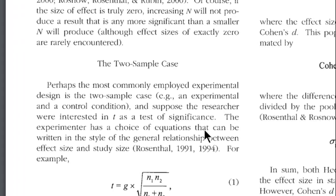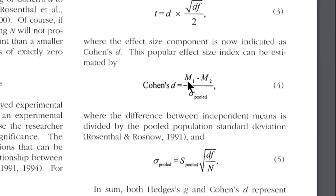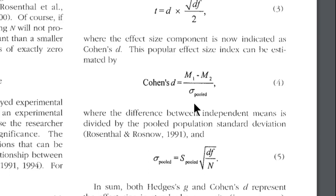And then the formula for Cohen's d is the difference between two means divided by a pooled sigma, which is really a population level standard deviation.